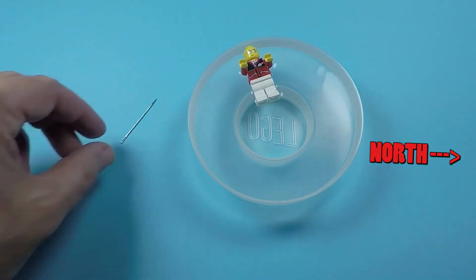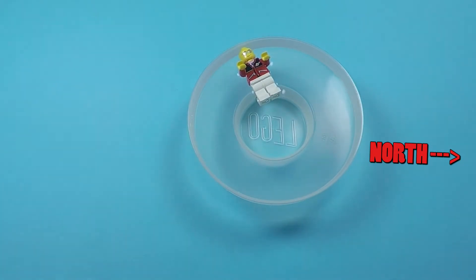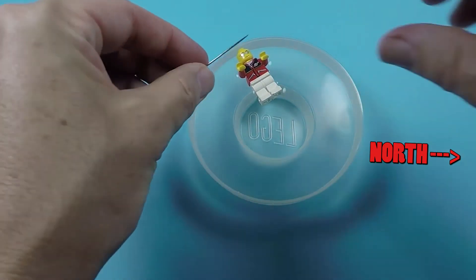Now let's try it with the needle. The needle probably magnetized easier because it didn't have a plastic coating like a paperclip.